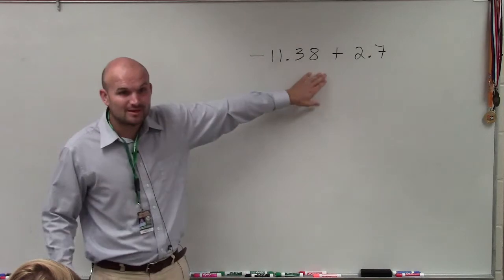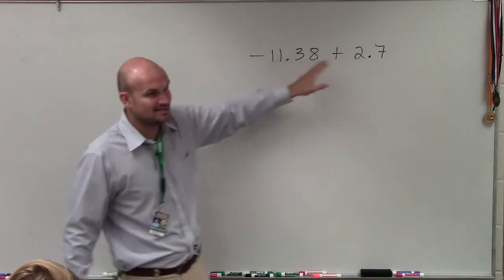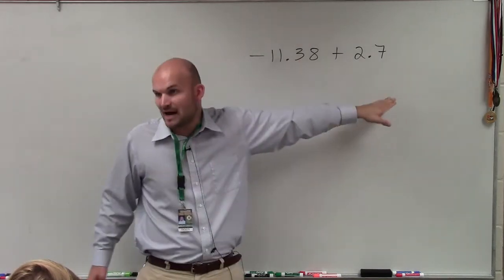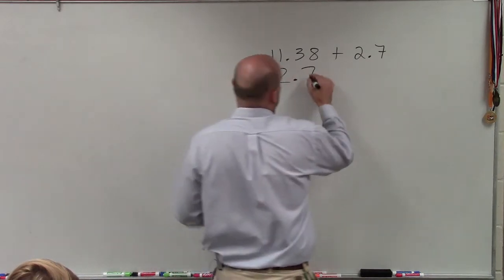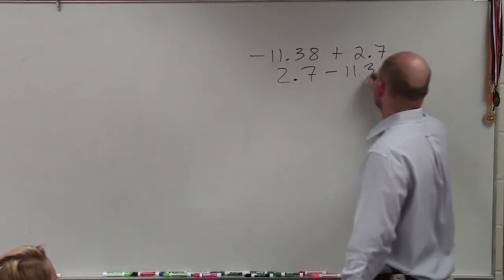But we have a problem. If I was going to rewrite this as a subtraction problem, right now it's kind of rewritten as a negative number plus a positive. If I was to rewrite this as subtraction, it would look like this: 2.7 minus 11.38.